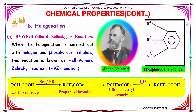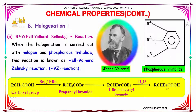HVZ, also known as the Hell-Volhard-Zelinsky reaction. When halogenation is carried out with halogen and phosphorus trihalide, this reaction is known as the Hell-Volhard-Zelinsky reaction. The carboxyl group in the presence of bromine or PBr3 produces propanoyl bromide, which on further decomposition gives 2-bromobutyryl bromide, and on hydrolysis produces R-CHBr-COOH.